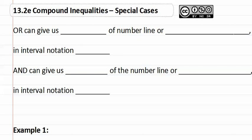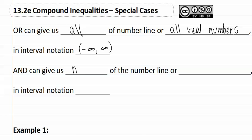13.2e Compound Inequalities: the special cases. An 'or' can give us all of the number line, or all real numbers. In interval notation, we write this as negative infinity to positive infinity. Another special case is that 'and' can give us none of the number line, or no solution, which we write in interval notation as a zero with a slash through it. Let's look at an example of each one of these.